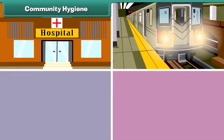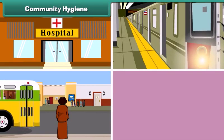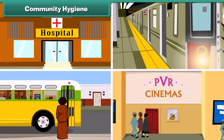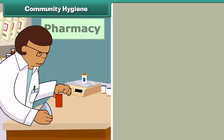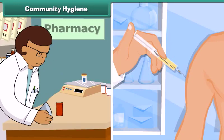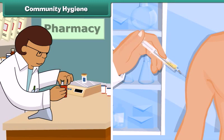Community hygiene: We must ensure community hygiene by keeping public places like hospitals, railway stations, bus stands and cinema halls clean, and by making medicines and vaccines available to people to cure and prevent diseases.